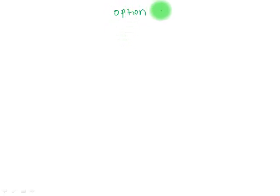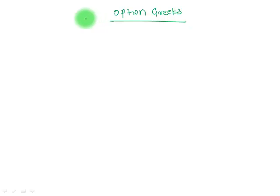We are on to option Greeks. The reason why they are called Greeks is because they use Greek alphabets. We have to find out the impact of different variables on the prices of options. There are five variables which affect the option prices.